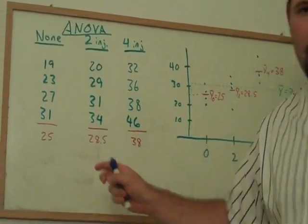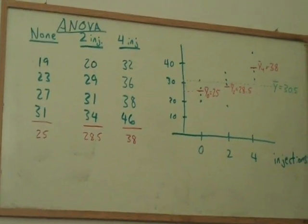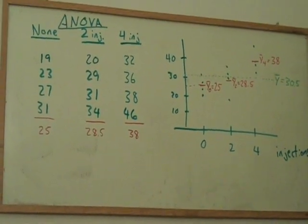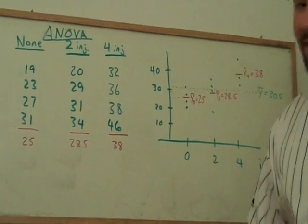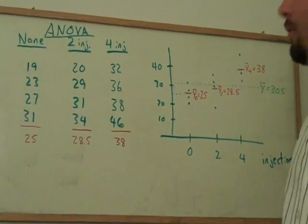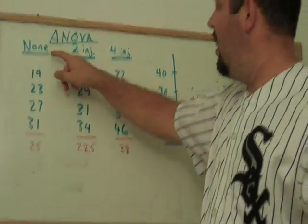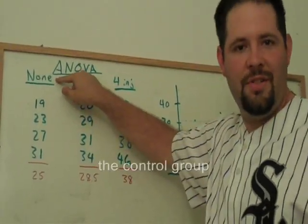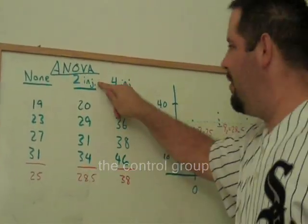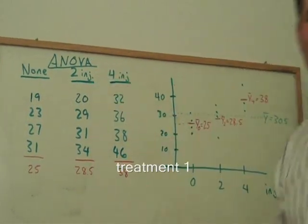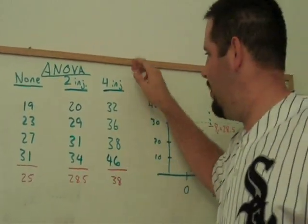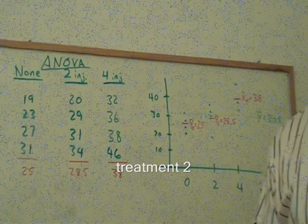These are made-up data from 12 baseball players that I randomly assigned, at least in my imagination, to three different groups. One group of four of these baseball players received no injection of steroids per week. Another group received two injections of steroids per week, and another group received four injections of steroids per week.